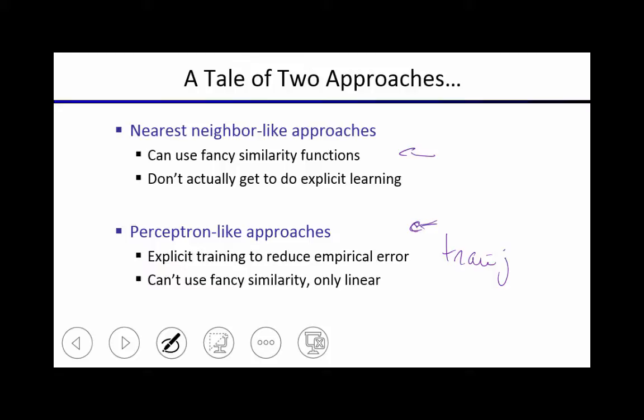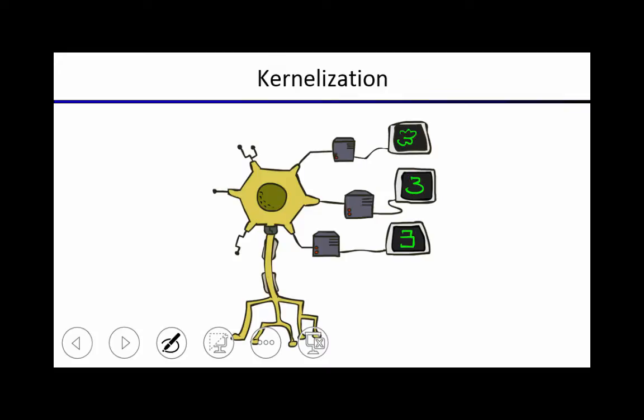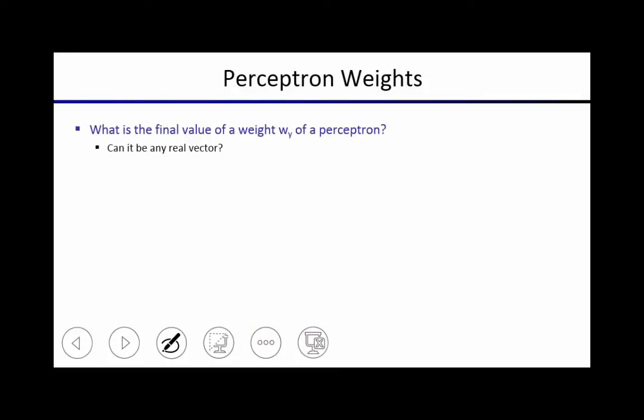So what we're going to do in most of the remainder of this lecture is unify these two approaches into a single approach that does both. The trick is called kernelization. Let's revisit the perceptron, and then see how from there we can get to effectively a nearest neighbor-like approach.